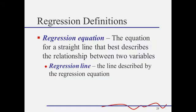So what is the regression equation? It's the equation for a straight line that best describes the relationship between two variables. It's calculated by minimizing the square distance between all the points and the line, so sometimes it's called the least squares regression equation.